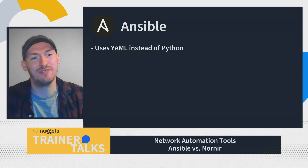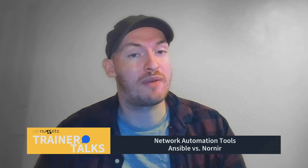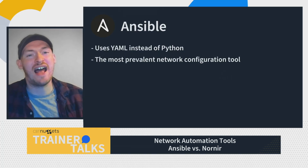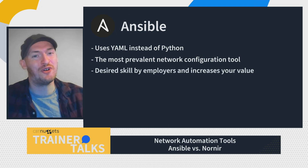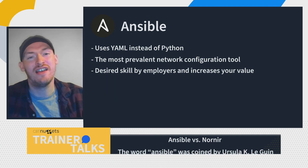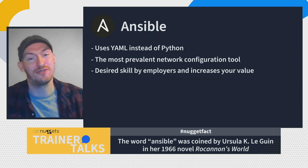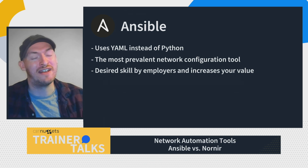The second reason to use Ansible is that it's the most popular network configuration tool on the market. A lot of people are using it, so it has a lot of community support. If you're having a problem, there's a good chance you can go onto a forum, a Slack channel, or a Reddit page and find someone to give you good advice or even the exact playbook you need. The third reason is that Ansible's popularity translates to market value — it's everywhere. You can think of Ansible as the CCNA of network automation; you're going to see it in job listings everywhere.